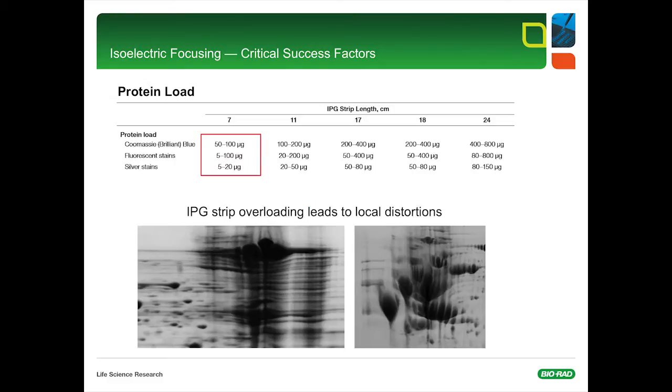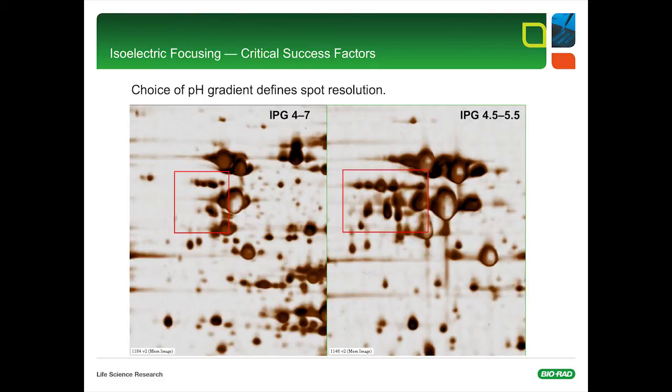The next critical success factor is protein loading. IPG strip overloading usually leads to local distortions, especially if a few highly abundant proteins are in your sample solution. The table on this slide suggests protein loads as a function of strip length and staining technique. Sometimes a single protein spot in a 2D gel represents more than one polypeptide. If you compare spot resolution on the IPG 4 to 7 versus IPG 4.5 to 5.5, if you're interested in detailed protein isoform characterization, you have to use narrow-range IPG gradients. And of course, don't work with 7-centimeter strips. You have to increase strip length up to 24 centimeters if isoform characterization is the goal.